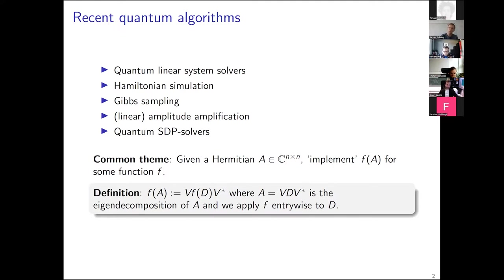Throughout I'm assuming A is a Hermitian matrix — this is just for convenience. You can also do everything for non-Hermitian matrices, but then you have to talk about left and right singular vectors. So if you write A in its eigen-decomposition as V D V*, then f(A) would simply be V f(D) V*, where we apply f entry-wise to the diagonal matrix of eigenvalues.